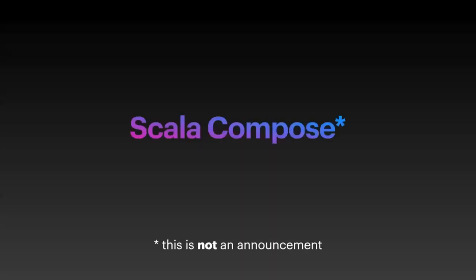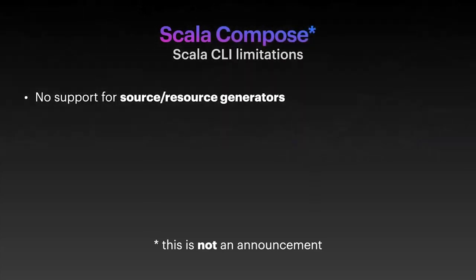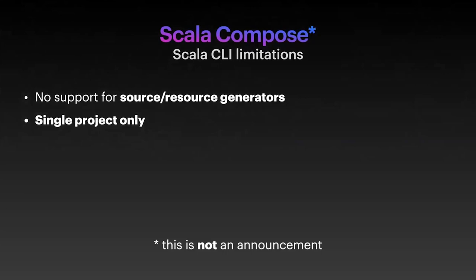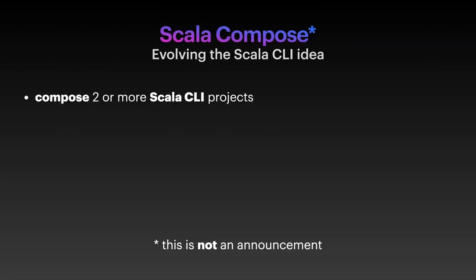The thing I really want to talk about is this project I'm calling 'Scala Compose' — though it's not an official announcement. It's something I hacked on weekends with Lucas Tronski from VirtusLab. The problem with Scala CLI currently is it doesn't have support for source generators or resource generators, and it only supports a single project — you can't have two libraries that depend on each other that you're currently developing. What I want to do with Scala Compose is take two Scala CLI projects and smash them together.